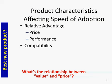Complexity is something that can also change the speed of adoption. If we have something that's very complex, the average consumer is going to be less likely to adopt it and is going to wait until they have a lot of resources — in terms of companies or opinion leaders — that can help them use it.